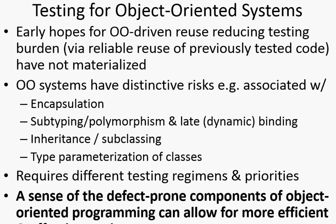Subtyping means a subtype can be passed around as an instance of the supertype. A hash table can be passed as a collection, as if it implements a dictionary interface. An array can be passed as an ArrayList, as a collection.